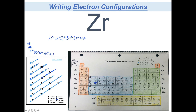I've filled through 4s and I'm now at 3d. D can hold 10 electrons, and with 20 electrons left and not yet at zirconium, we fill in all 10 — down to 10 electrons to go. I've filled all the way across 3d, now moving into 4p. P can hold 6, so we fill in all 6 — down to 4 electrons remaining. Then I move to 5s, which holds 2 — down to 2 electrons left.